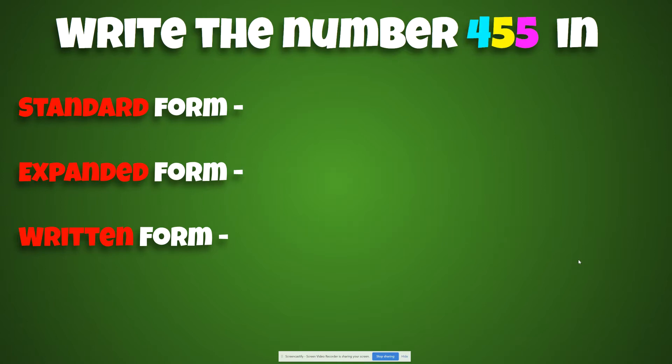Write the number 455 in standard form, exploded. I mean, I mean, expanded form and written form. I'll give you a minute. All right, guys. Good job. So standard form for 455 would just be the digits 4, 5, 5. Good job. Good job. Pat yourself on the back if you have gotten it.